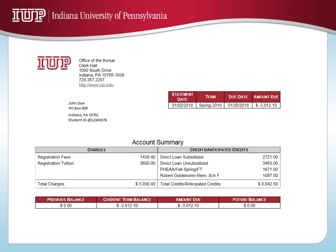This is an example of a student billing statement. Just a quick reminder: statements can be found in MyIUP EasyPay. On the top right hand side you will find the statement date, the term, the due date — which will always be the 20th of the following month — and the total amount due. Charges appear on the left hand side and financial aid on the right. Student credits greater than total charges will be reflected as a negative amount under current term balance, and this amount is what the Bursar's office processes as a refund.